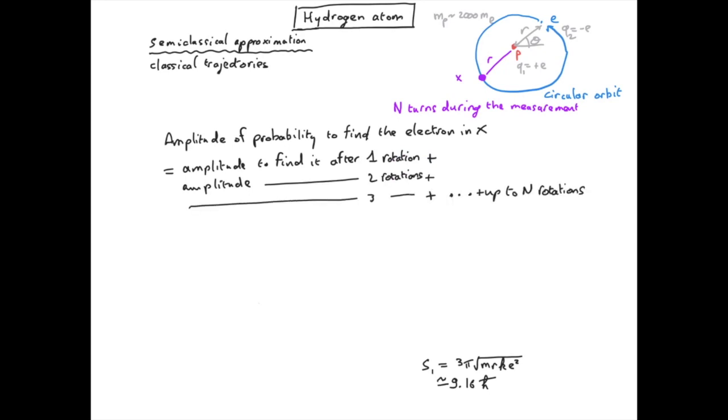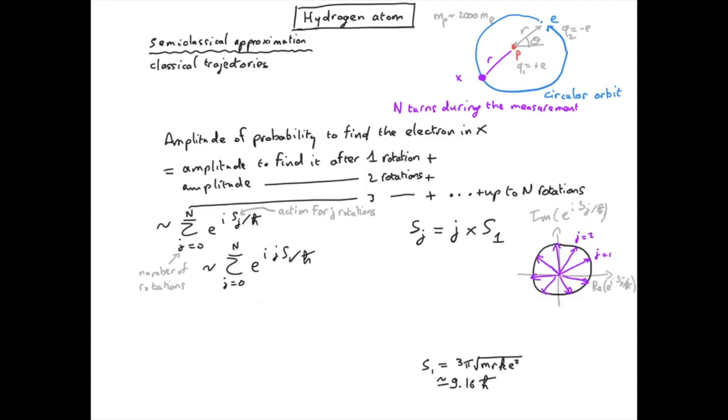This means we need to sum the phasor obtained for each number of rotations, where j is the number of rotations and Sj is the action for this number of rotations. Naturally Sj is just j times the action for one rotation S1 which we calculated earlier. So after each rotation the phasor will usually point in a different direction. With many rotations the sum of the phasors will quickly go to zero.